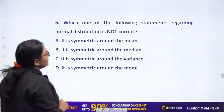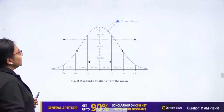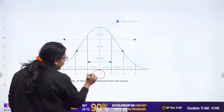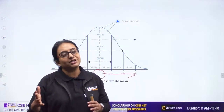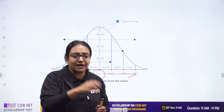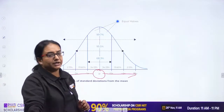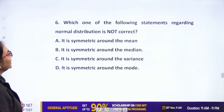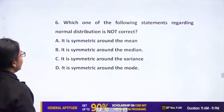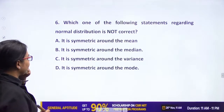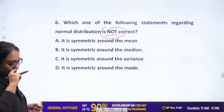Next question asks: 'Which one of the following statements regarding normal distribution is NOT correct?' Options include: symmetric around the mean, symmetric around the median, symmetric around the variance, and symmetric around the mode. A normal distribution is symmetric around the mean, median, and mode — but NOT around the variance. So the incorrect statement is that it is symmetric around the variance.